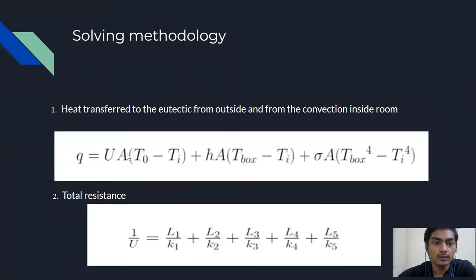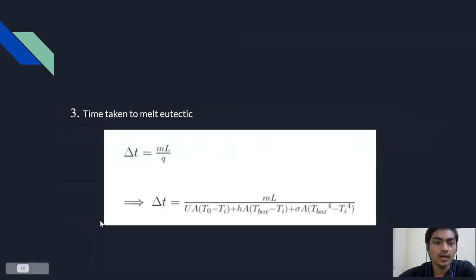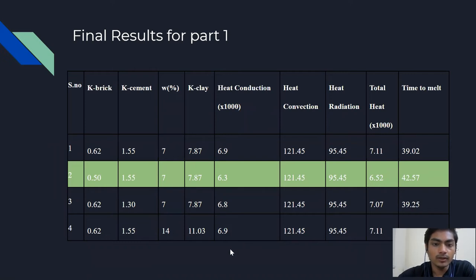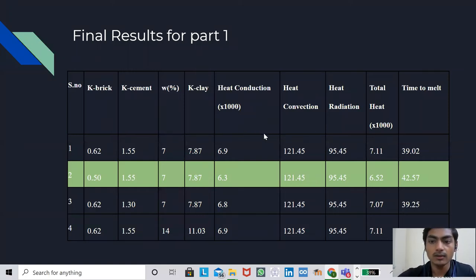Now, we will see the solution methodology. The heat transfer to the eutectic from outside and from the convection inside room is given by this formula. The total resistance for the same is this. Now, we will find the time taken to melt the eutectic, which will be given as delta t equal to ml by q. From here, we will find our delta t. We wrote a general MATLAB code for the time taken to melt the eutectic. We varied the thermal conductivities of brick, cement and clay and then found the most optimum value. We varied the values of thermal conductivity of brick, cement, clay and the moisture content of clay. What we found is that the combination of values corresponding to serial number two gives us the most optimum combination. Most optimum combination is something that will give us the highest time to melt the eutectic.